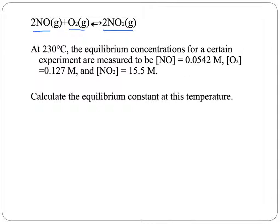So this reaction at equilibrium at a temperature of 230 degrees Celsius, we find out that the concentrations of the nitrogen monoxide are 0.0542 molarity, oxygen gas is 0.127 molarity, and nitrogen dioxide is 15.5 molarity. So we need to calculate the equilibrium constant at this temperature.